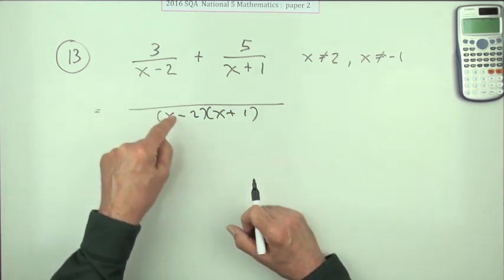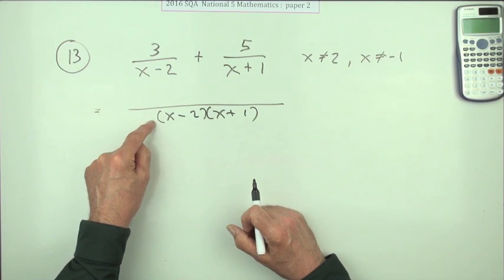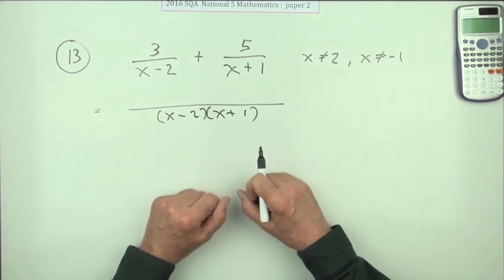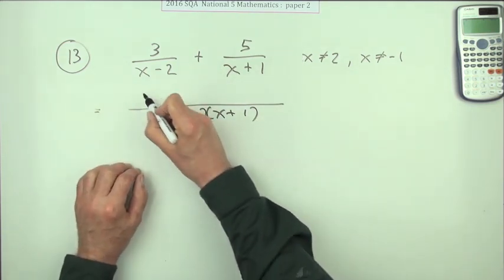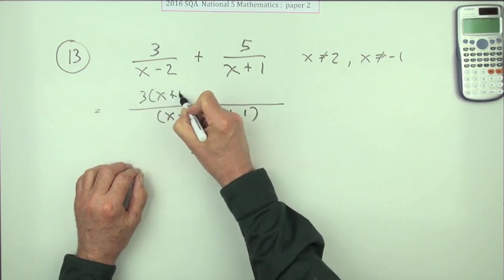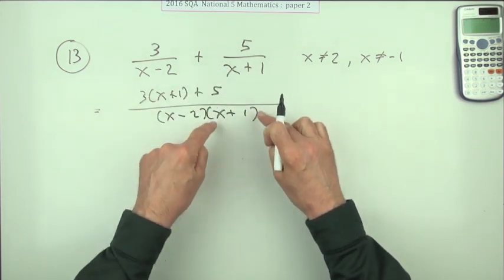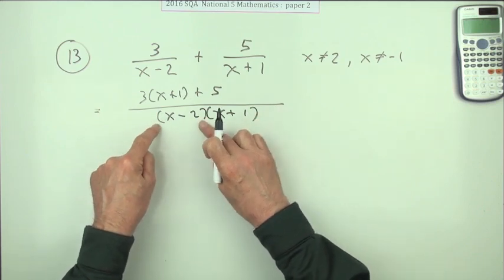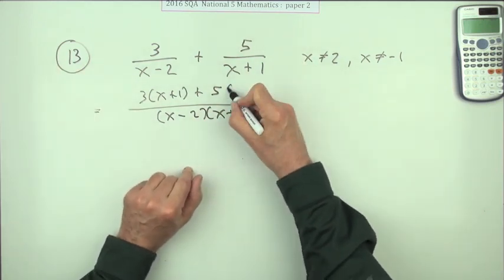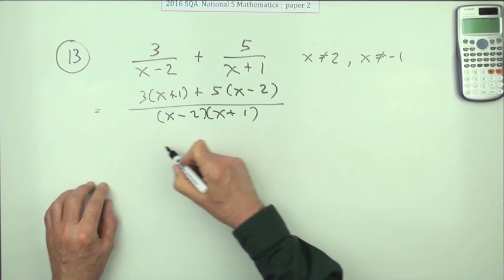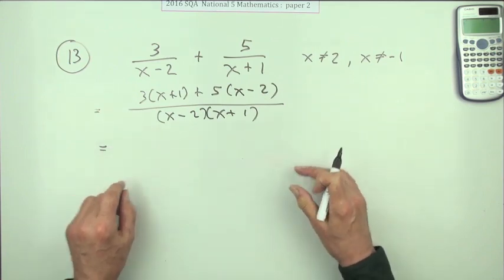As it is here, what would you multiply x minus 2 by? x plus 1, no surprise, because that's what you multiplied it by. So this gets multiplied by x plus 1. x plus 1, what did you multiply it by? x minus 2. So multiply this by x minus 2.